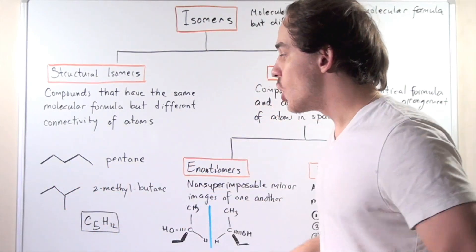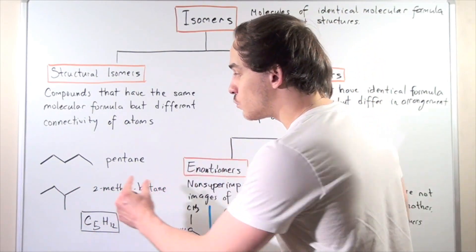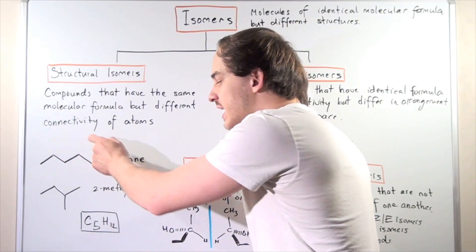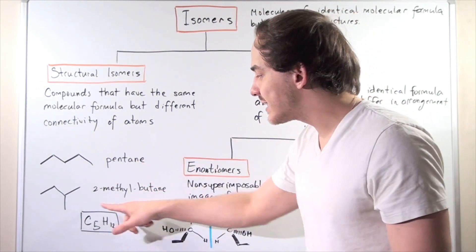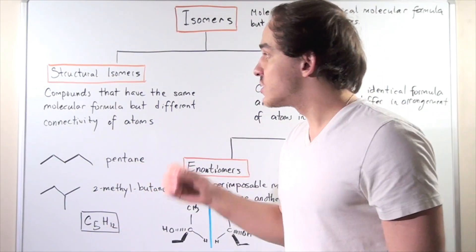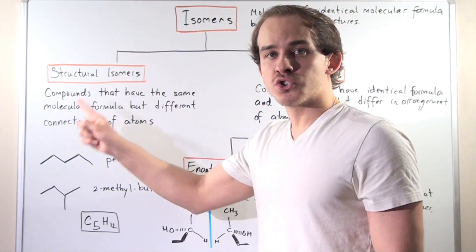While this compound has a four-carbon backbone. One of the atoms has been removed from this position and placed on the second carbon. So there is a difference in connectivity, but we have the same exact molecular formula. These are known as structural isomers.